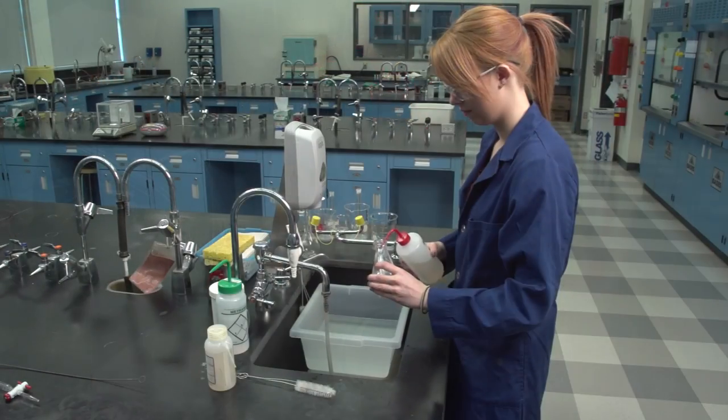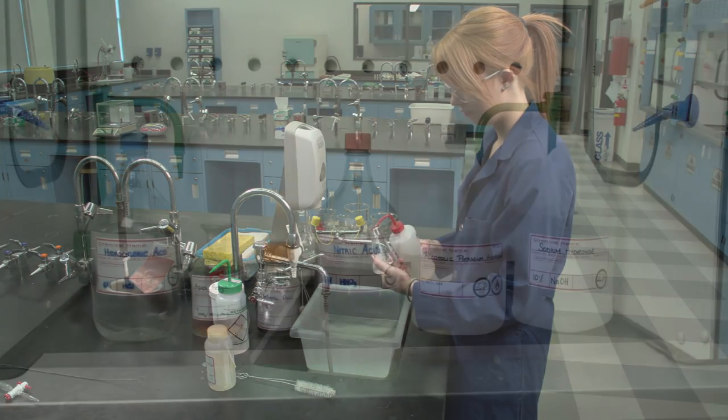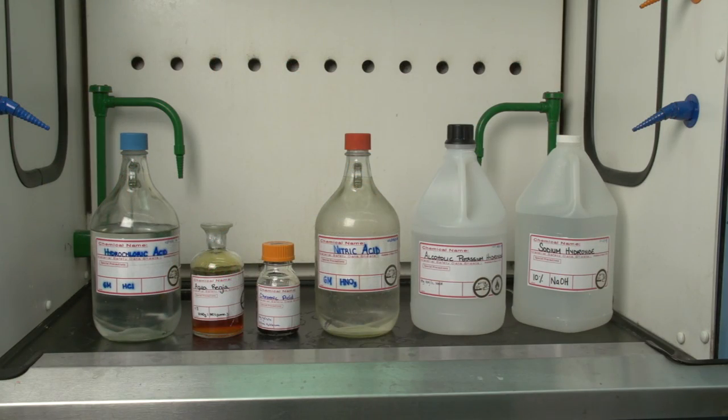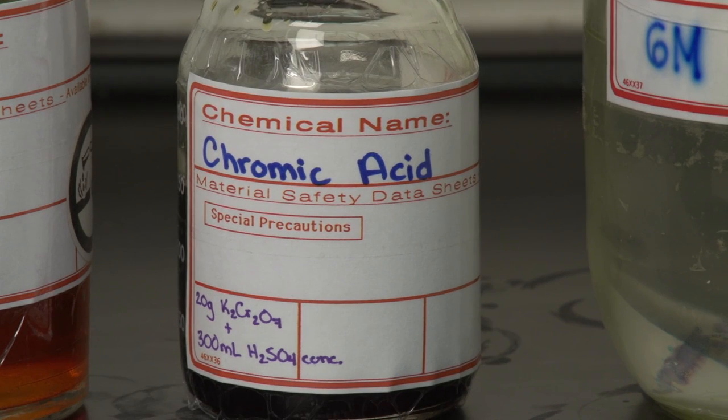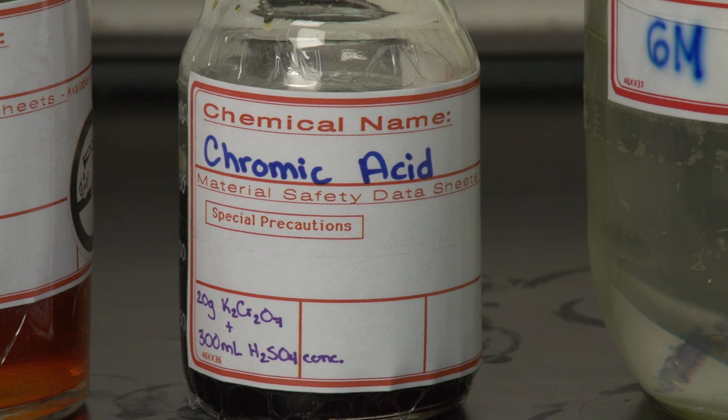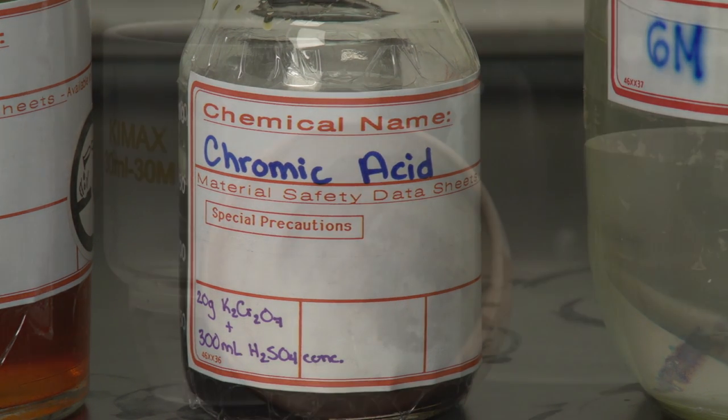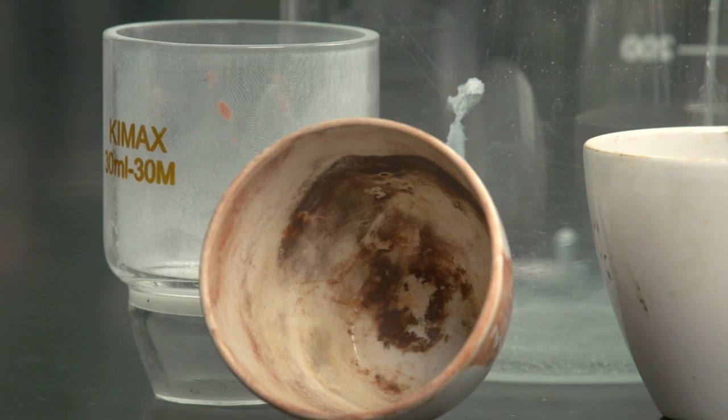If soaking in the appropriate chemical agent is not sufficient, more corrosive agents have to be used. A chromic acid cleaning solution made of chromium-6 oxide in sulfuric acid may be used to remove stubborn deposits.